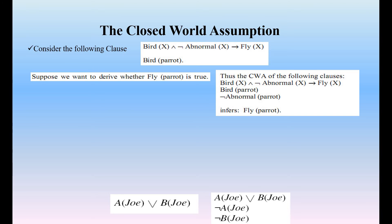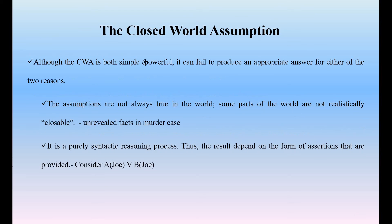Consider the following clause: bird(x) and not abnormal(x) implies fly(x). Normally a bird like a parrot is not an abnormal one, so it can fly. Using closed world assumption: bird(x) and not abnormal(x) implies fly(x); bird(parrot) — not abnormal is assumed for parrot, so fly(parrot) is true. Similarly, for statements like A(joe) or B(joe), with negation A(joe) and negation B(joe), such statements come under the closed world assumption.